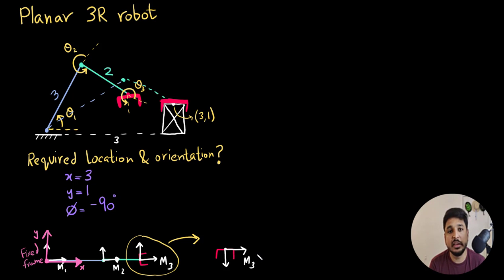And you can see that it has rotated 270 degrees in the anti-clockwise direction or 90 degrees in the clockwise direction. Since anti-clockwise is positive, clockwise is negative. So it is minus 90 degrees. One thing to note is that the orientation of the end effector is not theta 3.